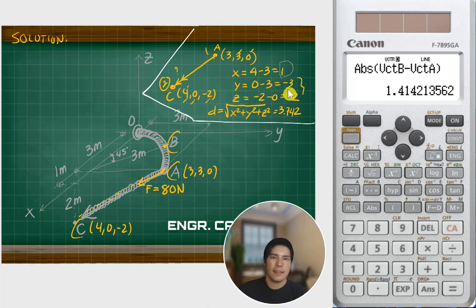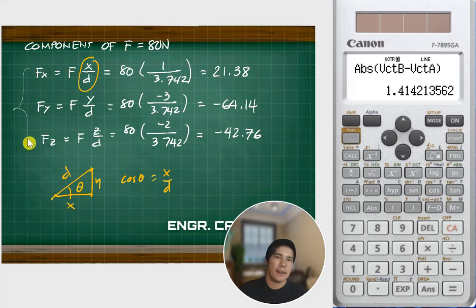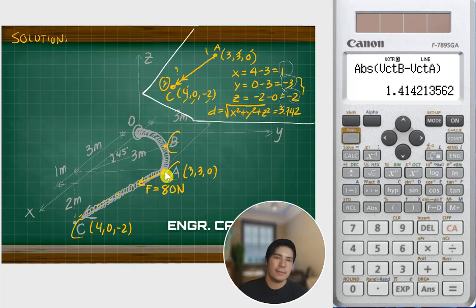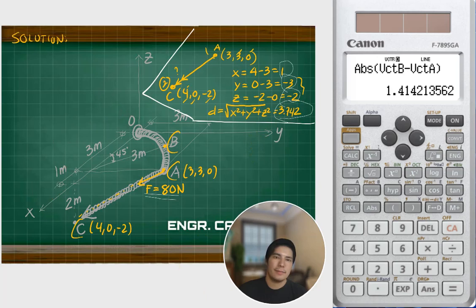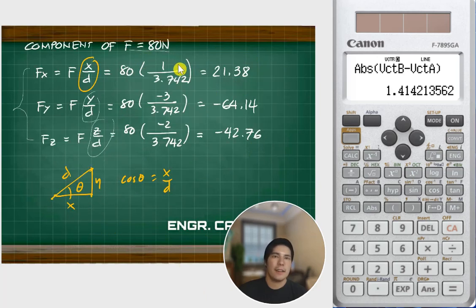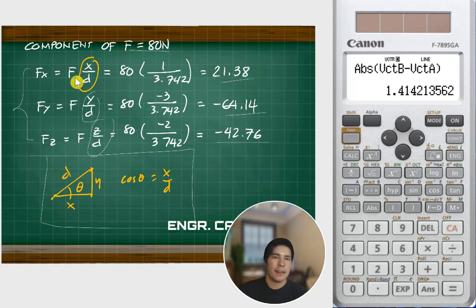After computing the distance, we convert the 80 N force into vector components. fx = 80·(x/d), fy = 80·(y/d), fz = 80·(z/d), where d = 3.742. So we have 80 times each component divided by the distance — similar to resolving force using cos θ and sin θ.